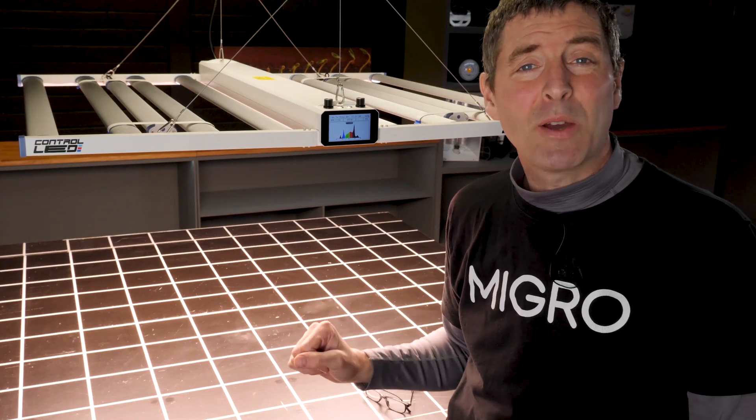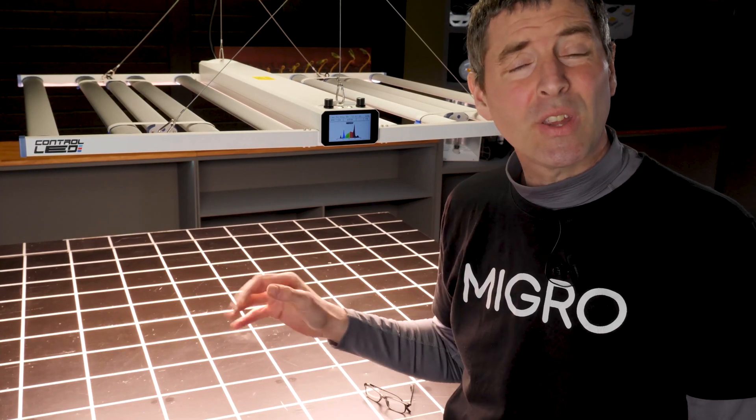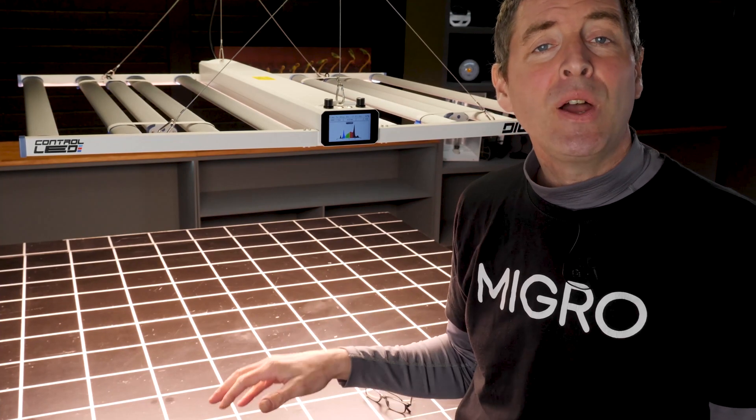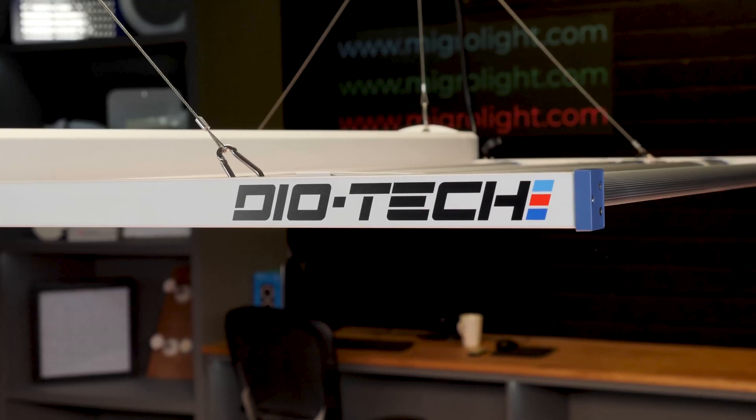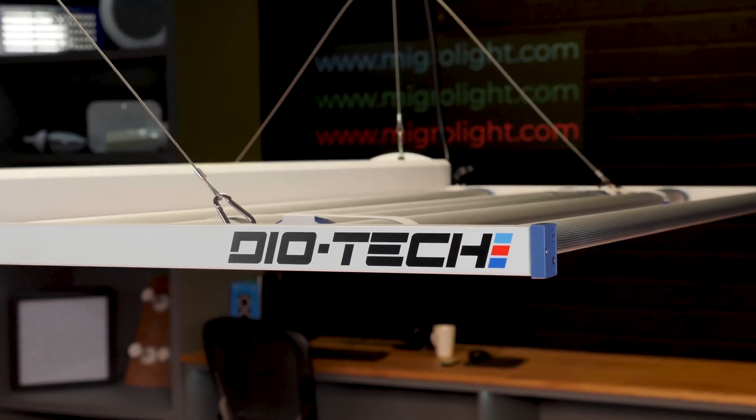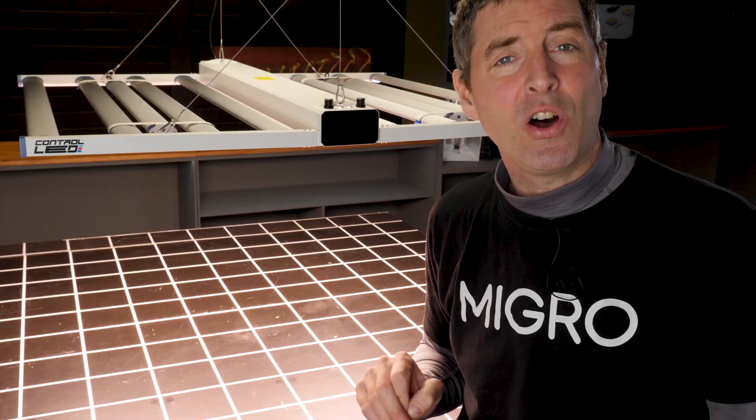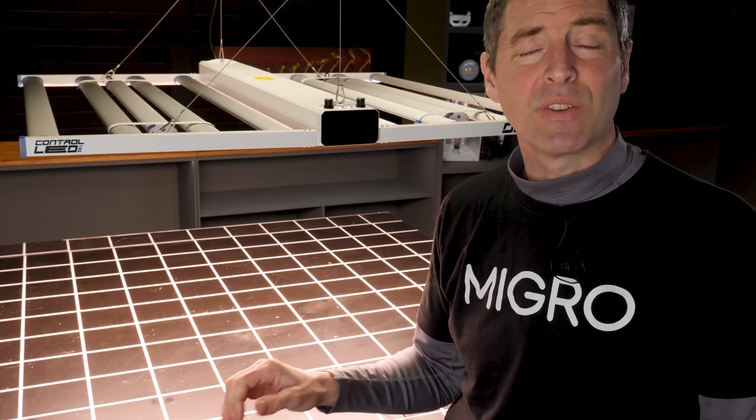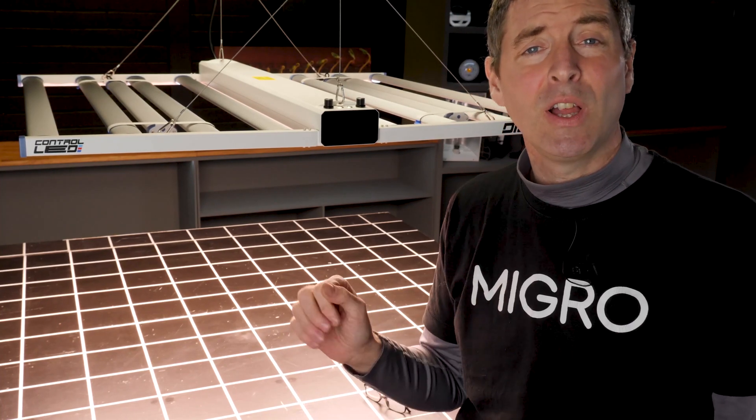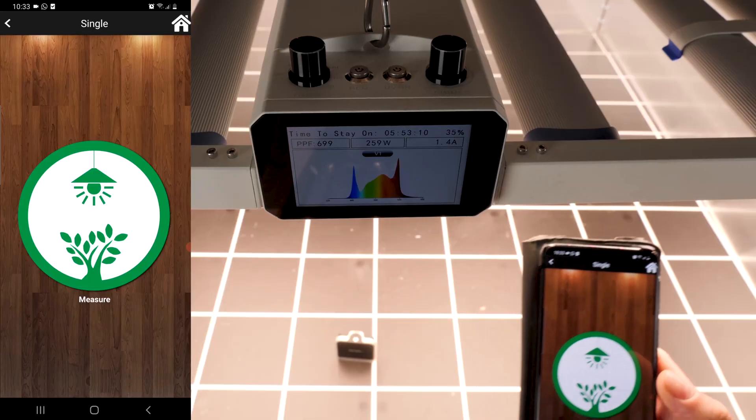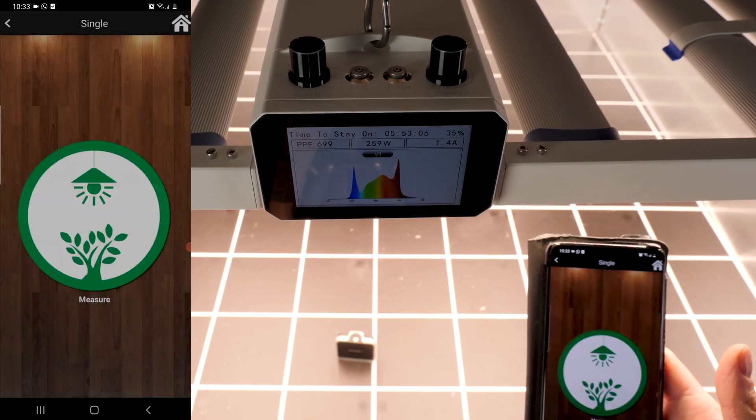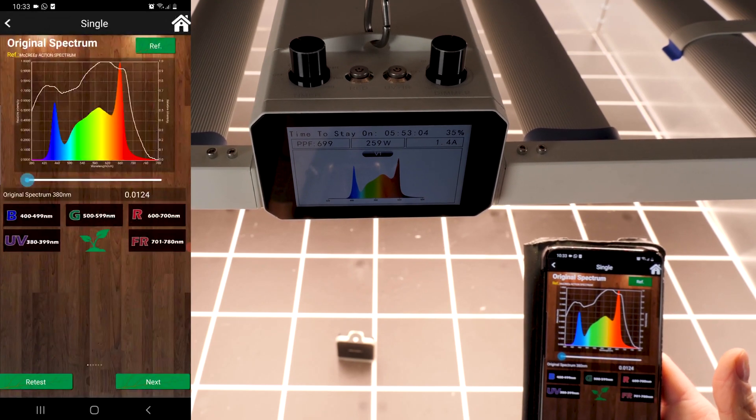I then tested the spectrum output on the fixture using a Sensatec passport spectroradiometer. So I switched everything off, as in the UV, IR off, and the flowering button off, and just ran it at its basic vegetative setting. And you can see here, it's got a full spectrum output with a nice blue peak for good vegetative growth, which requires a good proportion, at least 10% blue in the spectrum.